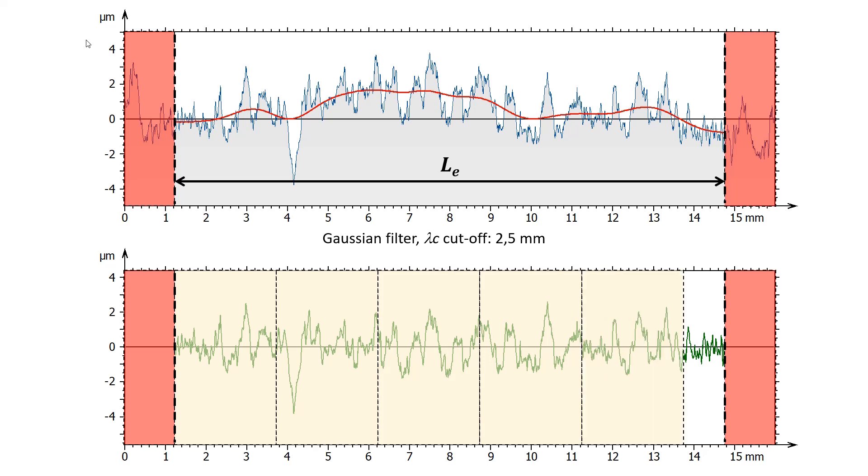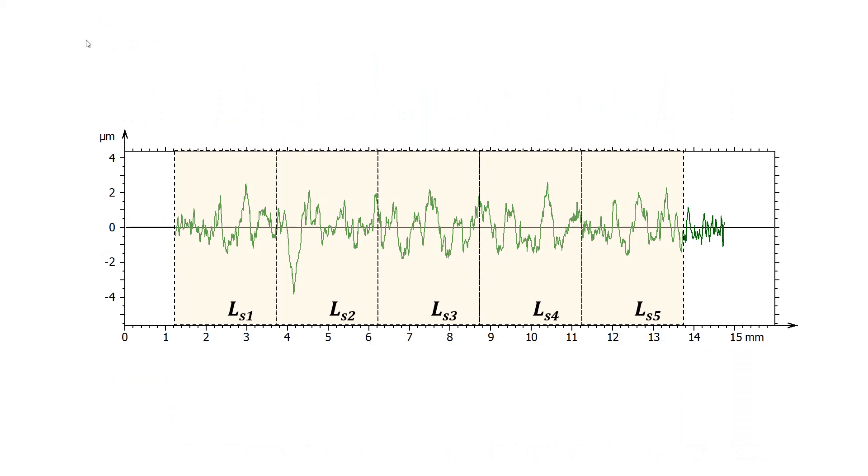ISO 4288 specifies that the roughness profile is decomposed into small portions, called sampling lengths, that have a length equal to the cutoff value. Parameters are calculated on each sampling length and are combined in an average value, which is normally less sensitive to noise and outliers.